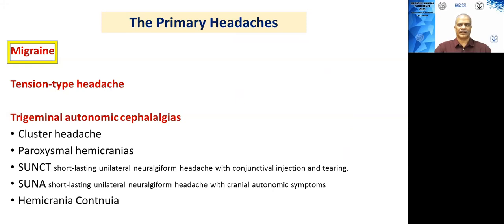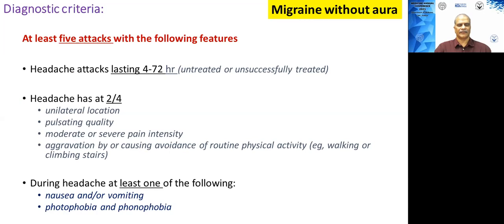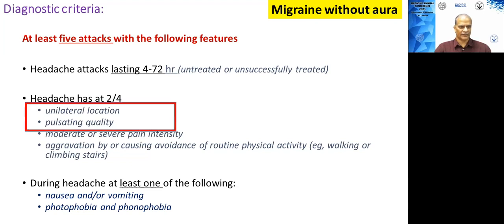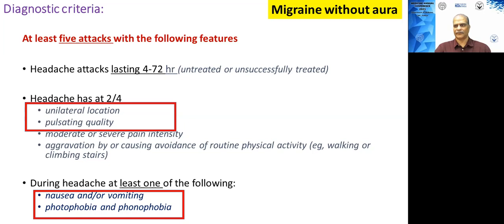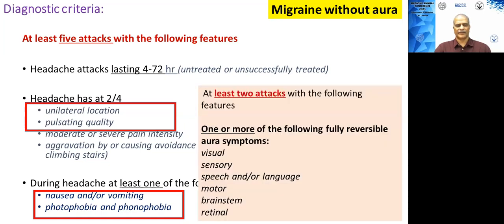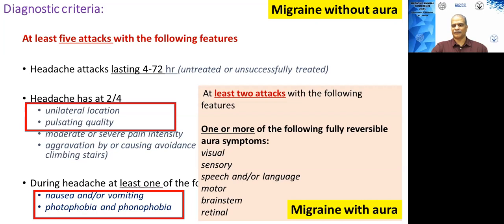Moving to the next group — migraine headaches. There are strict criteria to diagnose migraine: headaches should last at least 4 to 72 hours, and the patient should have had at least 5 attacks. Other important clues are unilateral location, pulsatile quality, and associated features like nausea, vomiting, photophobia, and phonophobia. If the patient additionally has at least 2 attacks with aura — which can be visual, sensory, motor, or brainstem — it is labelled migraine with aura; otherwise it is common migraine without aura.